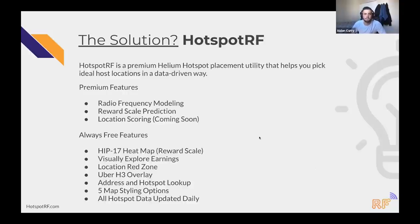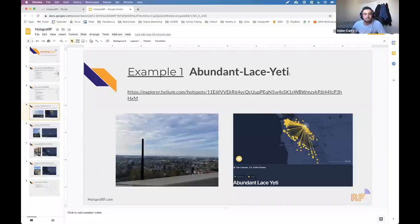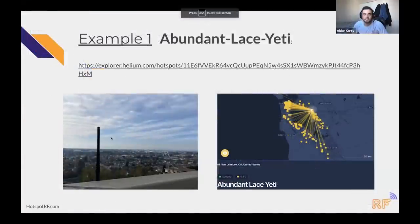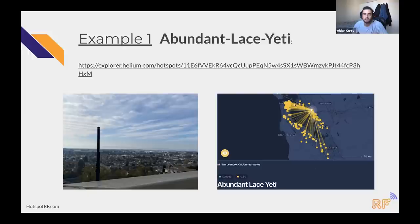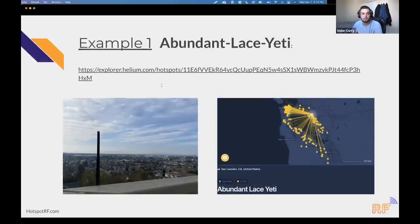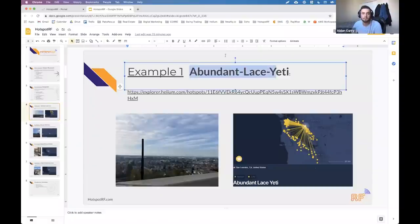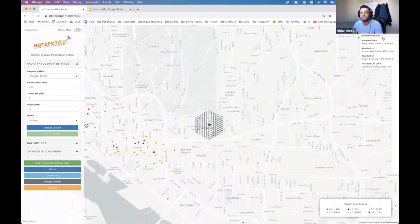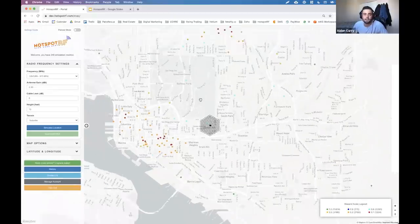Let me use some of the hotspots I actually own as examples. This first hotspot is one of my top performers — it's overlooking the SF area, in San Leandro, on my friend's second-floor apartment balcony with the antenna outside. Here's a screenshot from the Explorer I took yesterday showing all of the witnesses it's currently able to reach. Let's go model this hotspot live — it's called 'Abundantly Steady.' We can easily search for the hotspot name and pull it up.